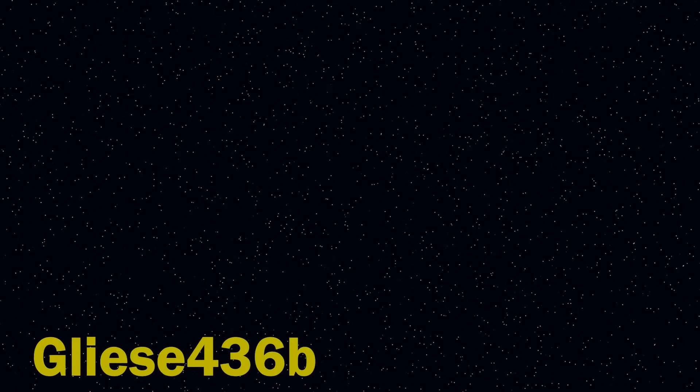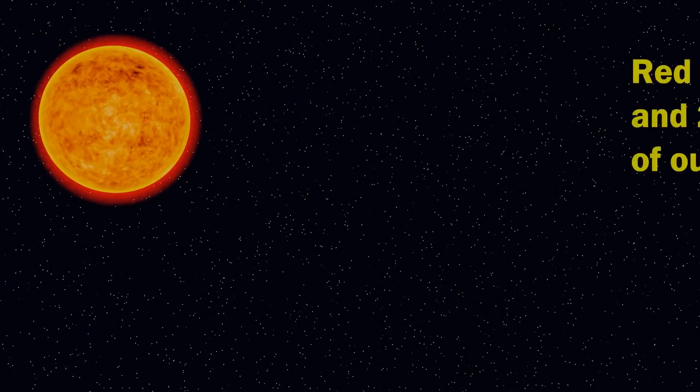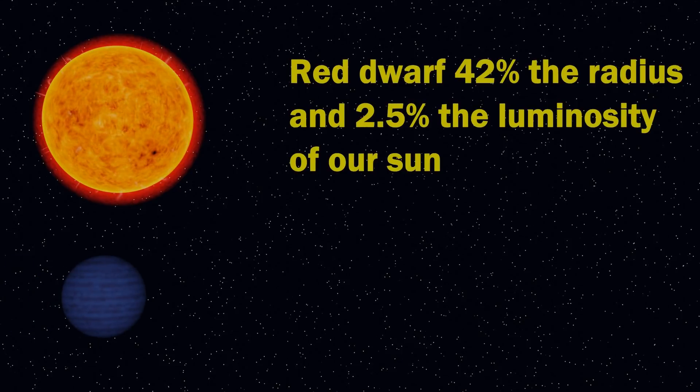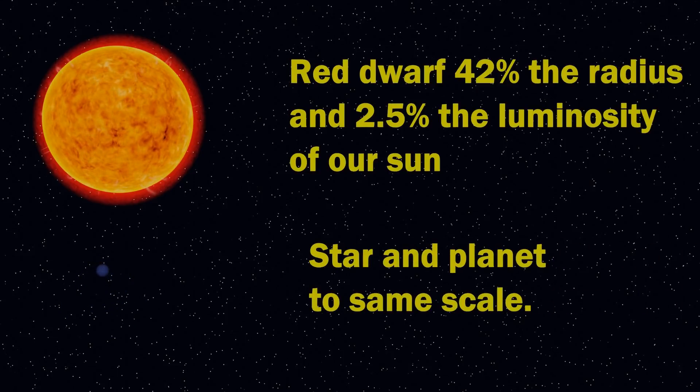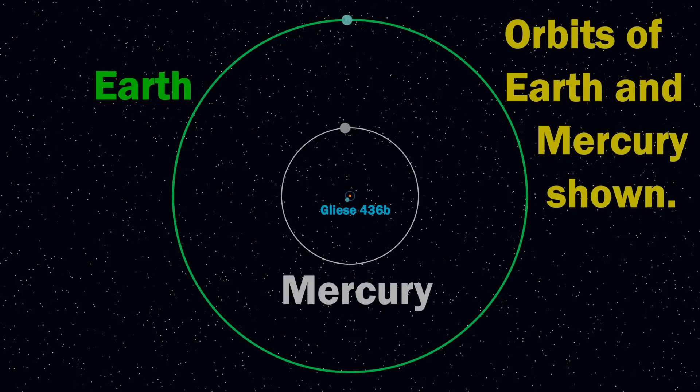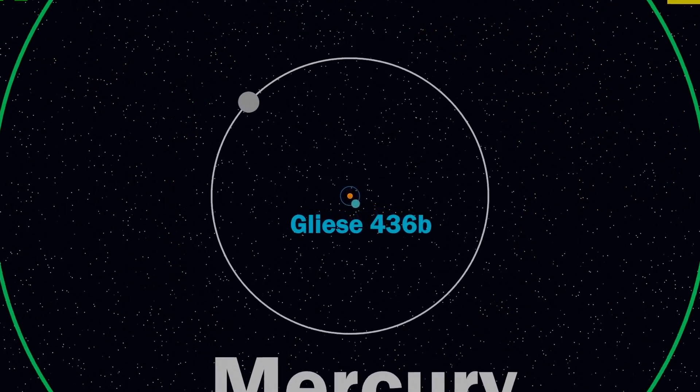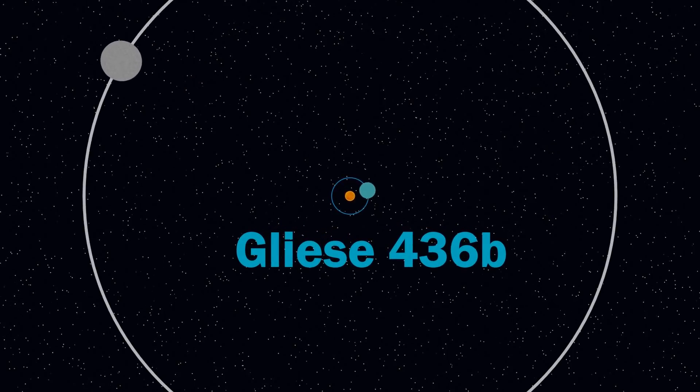Here at number two we have the very weird Gliese 436b. The star Gliese 436 is a red dwarf star, found about 30 light years from the Earth, and the planet is a Neptune-like planet, but orbiting just over 4 million miles from the star. That's much closer than the orbit of Mercury around our own Sun. This means that Gliese 436b orbits its star in just two and a half days, and has a surface temperature of about 440 degrees Celsius. Nothing too weird so far, but hang on.